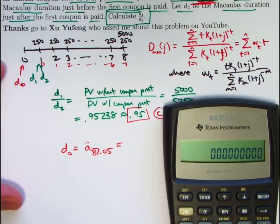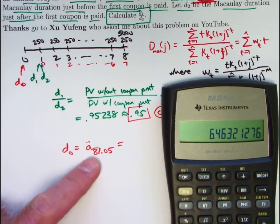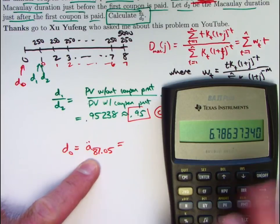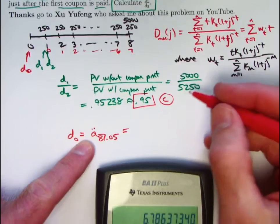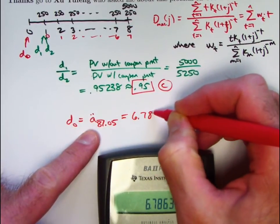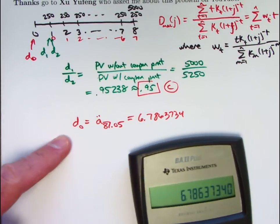Let's go ahead and calculate this. So, let's see, we can take 1.05, take its reciprocal, there's V to the 8th power, subtract from 1, divide by 0.05, and this is A double dot, it's not A, so we need to multiply by 1 plus J, 1.05. So, D0, the duration, the average length of the bond relative to time zero is 6.7863734.